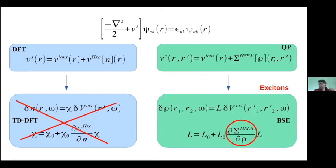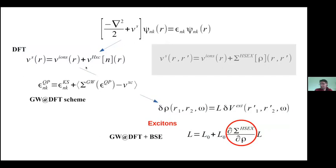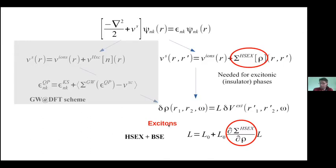Since solving the quasi-particle equation with a non-local self-energy is usually very demanding, what we often do is: we do a DFT ground state calculation, add the self-energy corrections, then move to the Bethe-Salpeter equation. This scheme works very nicely in many situations and is able to describe excitonic peaks in absorption at equilibrium. However, one should keep in mind that the correct path involves this fully self-consistent approach where the RΣ+SEX self-energy is used. This is needed, for example, for the excitonic insulator phase, and it is something I will also use in this talk.